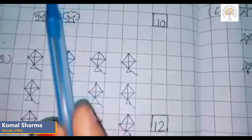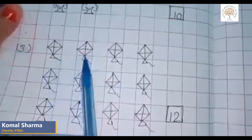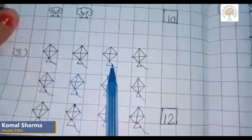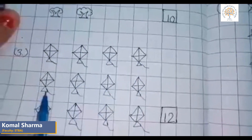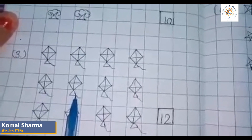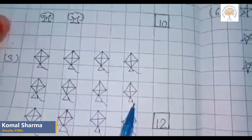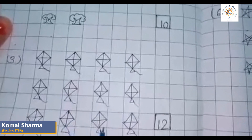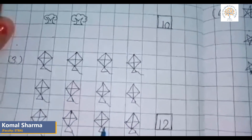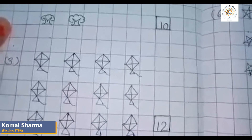Now we count the pictures of kites: one, two, three, four, five, six, seven, eight, nine, ten, eleven, twelve. There are twelve pictures of kites.